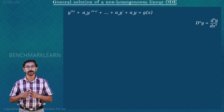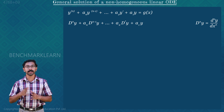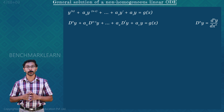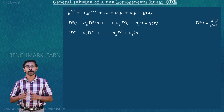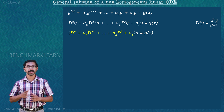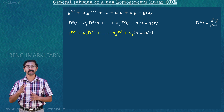The differential equation can be rewritten as D^n · y plus a_n · D^(n−1) · y plus etc. plus a2 · D^1 · y plus a1 · y equals g(x). That is, (D^n + a_n · D^(n−1) + ... + a2 · D^1 + a1) · y equals g(x). The expression D^n + a_n · D^(n−1) + ... + a2 · D + a1 is a polynomial function in D.